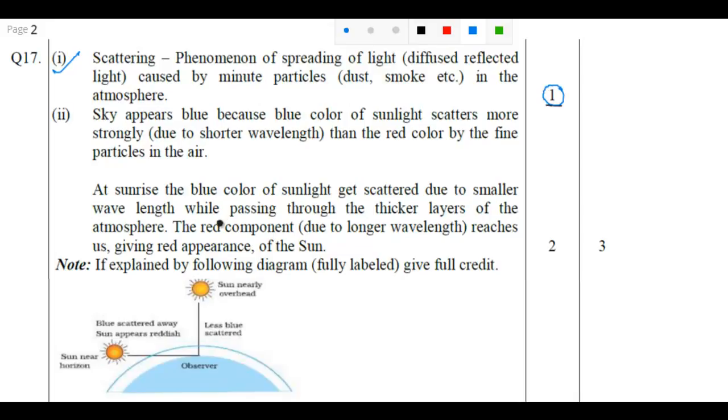Now dear students, let's see the second question. Why sky appears blue? So the reason behind that is blue color of sunlight scatters more strongly, the reason being due to shorter wavelength. Sky appears blue because the blue color of sunlight scatters more strongly due to shorter wavelength than the red color by the fine particles in the air.